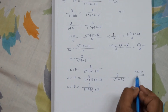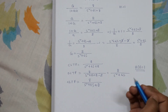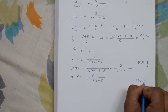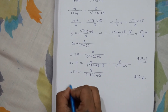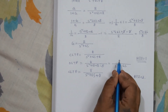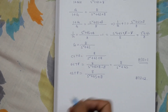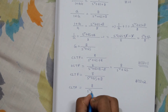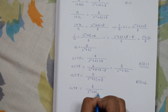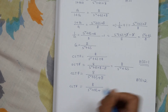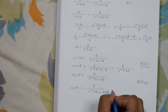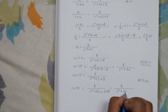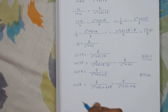If H(s) is not equal to 1, we can still use this shortcut. Let's take H(s) equal to 2. Suppose this is our open loop transfer function. For converting it into closed loop transfer function, we add the numerator multiplied by H(s), meaning 2 into 8, in the denominator. So the closed loop transfer function will be 8 by s squared plus 6s plus 16.